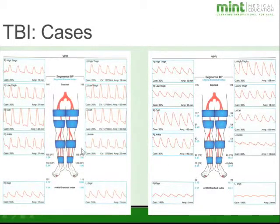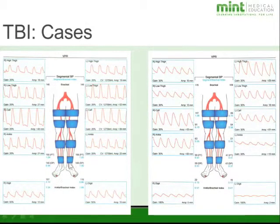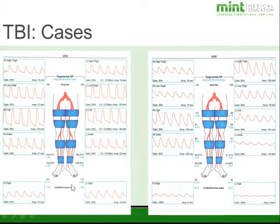Looking at our case examples, at the bottom we see the digits. On one side we have the sharp upstroke and the notch on both sides. The digital pressures are 107 and 119; 107 over 149 equals 0.72, and 119 over 149 equals 0.8. Depending on your criteria, these would be considered normal.